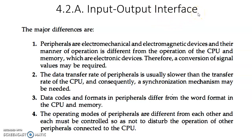What is this interface? Why do we need this interface? That is the topic. Initially we will look at the differences between peripheral devices and CPU. The first major difference is that the manner of operation of the peripheral device is either electromechanical, electromagnetic, or electro-optical, but the CPU is purely electrical. So this is one major difference, and this conversion of signals is required. The second reason is the data transfer rate of peripheral devices and CPU is different.